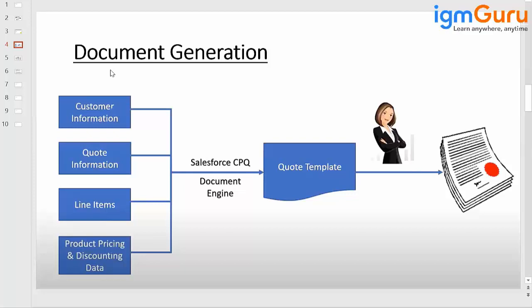You can do customization based on your need, but there is a standard document provided by Salesforce. You can refer to those documents and see all information related to the customer, the product you have selected, if you have given any kind of discount or markup — all those details you will be seeing in the code template.